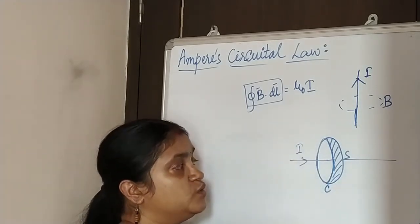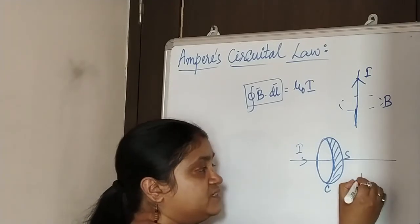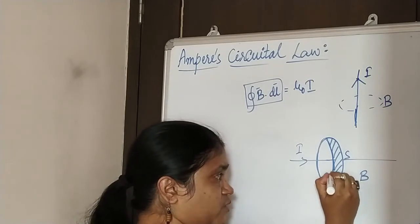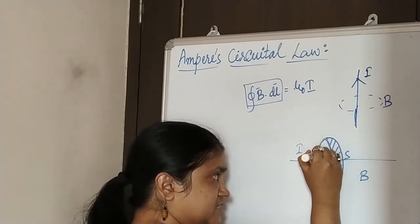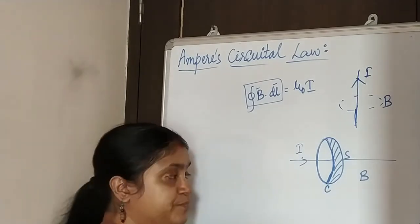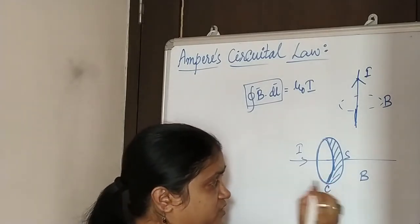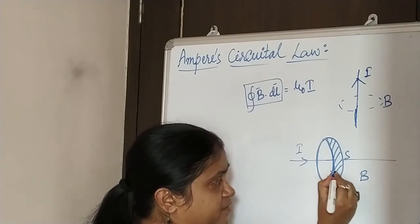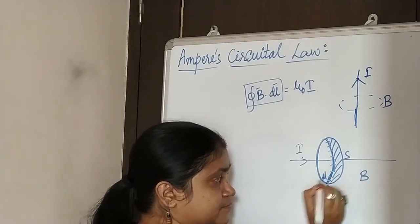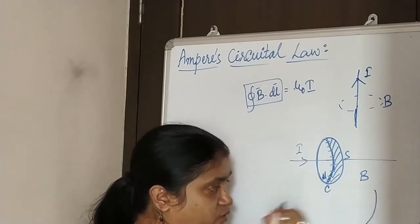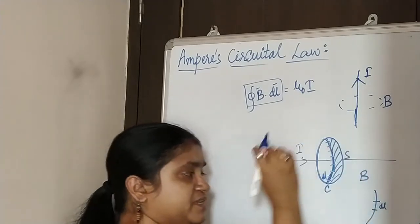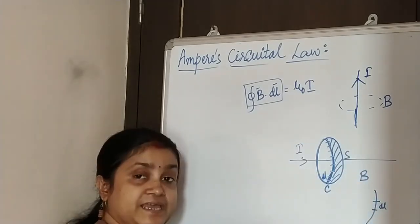This current I would produce a magnetic field B. First let us look at this boundary line, that is the curve C. This is the boundary of the surface. This boundary is made up of very small length DL. This is the boundary line and it is made up of small length DL. Like that, many small lengths DL are there.